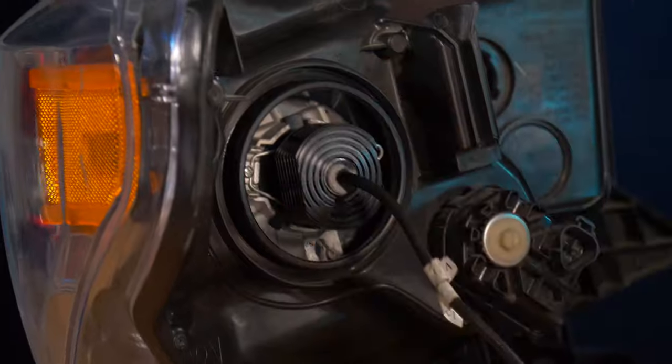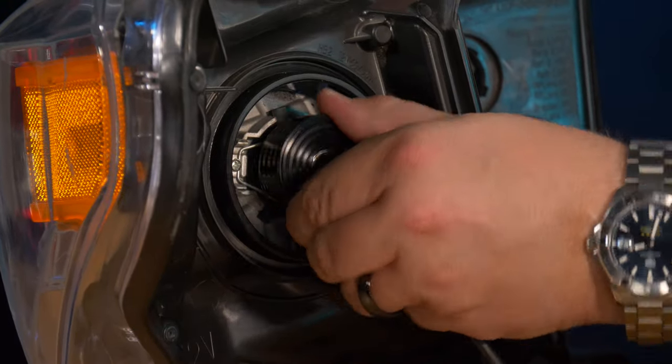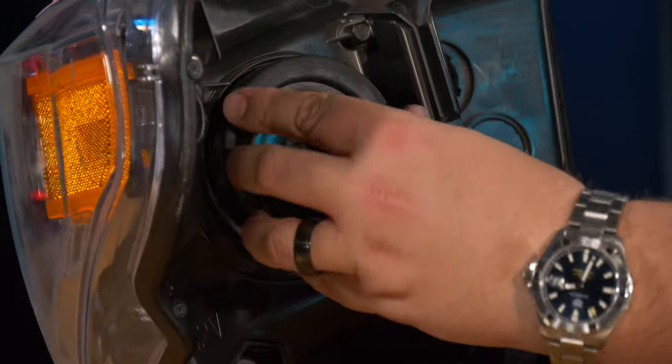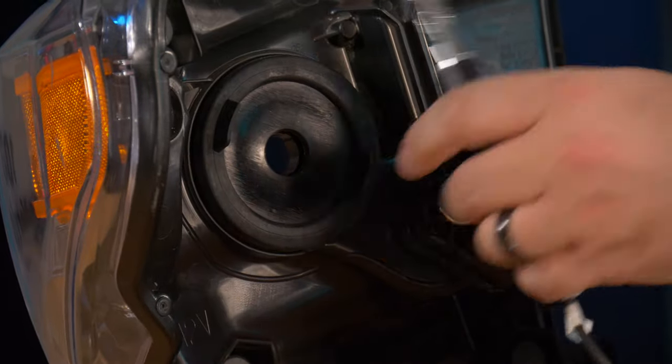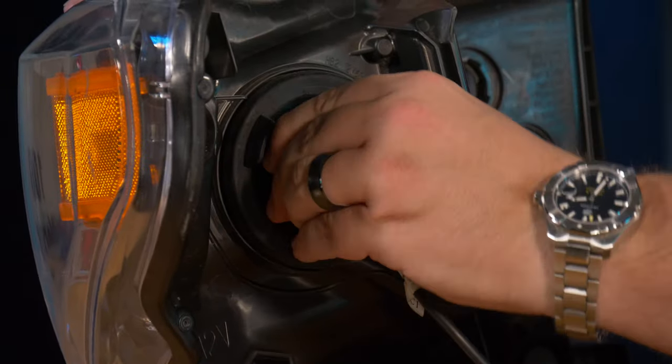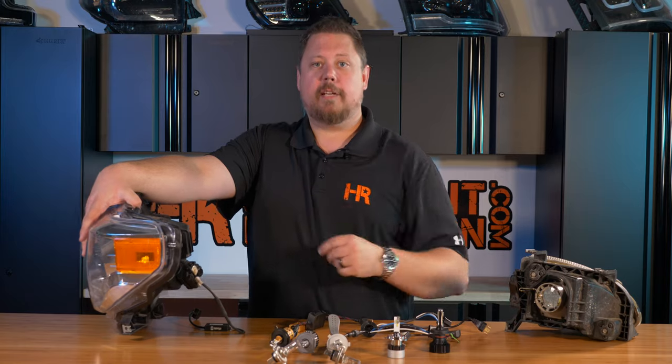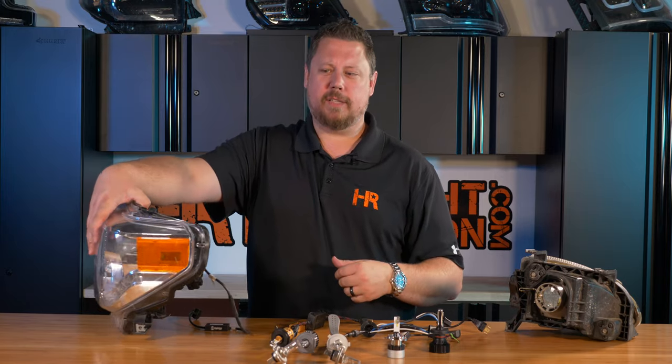Now it's all wide open so you can't forget to install the dust cover. The dust cover should be able to go right back on how it came off and get sandwiched between the mounting collar and your bulb. Line everything up, insert and twist until it's in place.